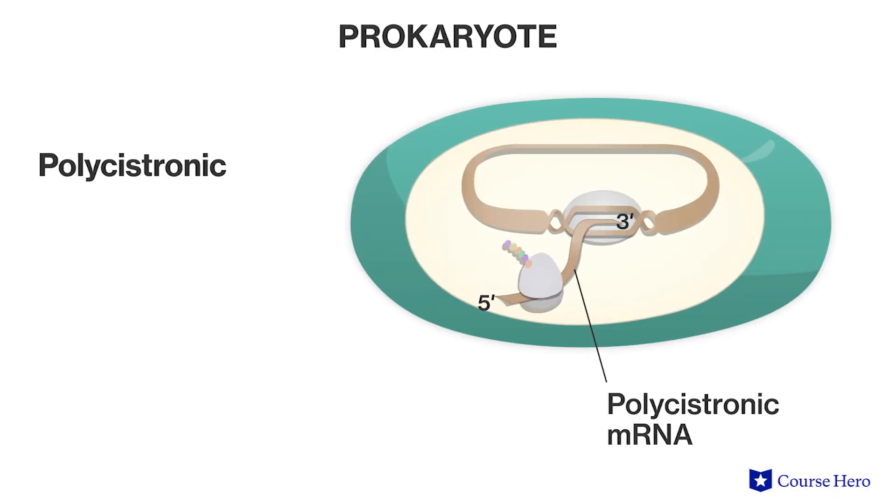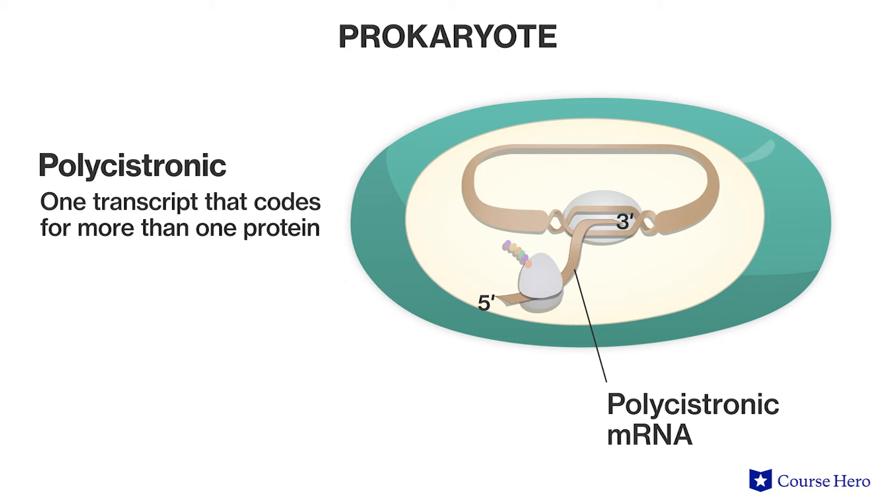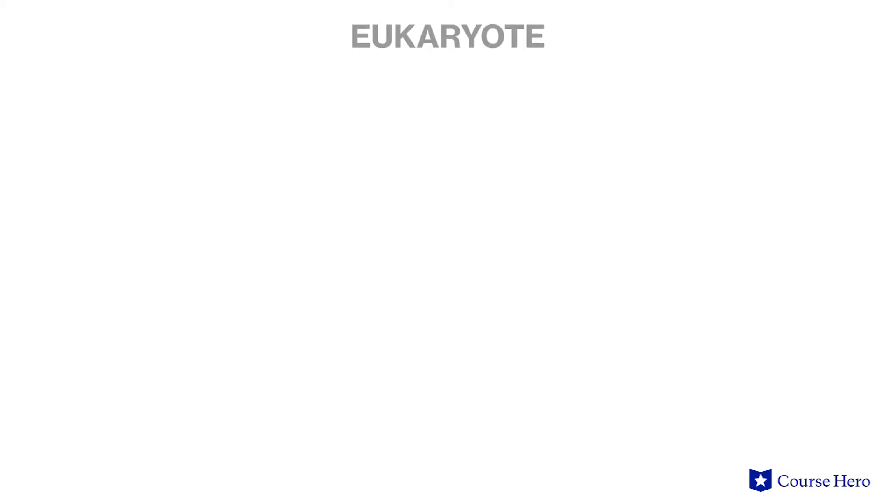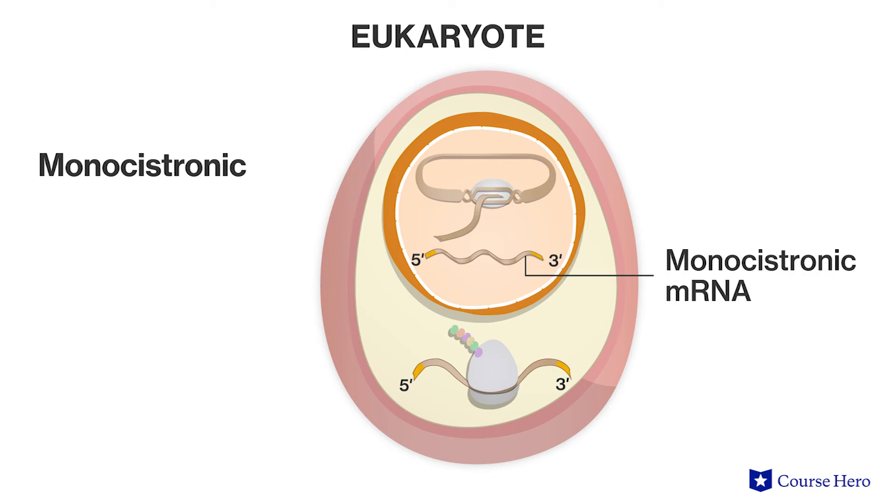Prokaryotes use a special nucleotide sequence before the AUG start codon to begin translation. Another key difference is that prokaryotic mRNA is polycistronic, meaning it is one transcript that codes for more than one protein, whereas most eukaryotic mRNAs are monocistronic, coding for just one protein. Finally, ribosomes in prokaryotes are smaller than those in eukaryotes and contain different RNA sequences. This has proven beneficial, as certain antibiotics target the ribosomes of bacteria specifically, meaning the infection can be destroyed without hurting the cells of the person who is ill.